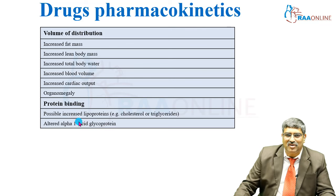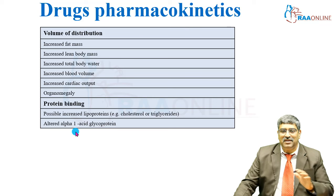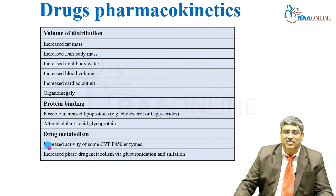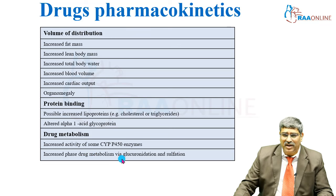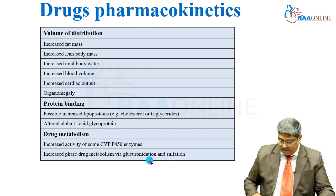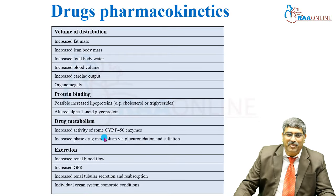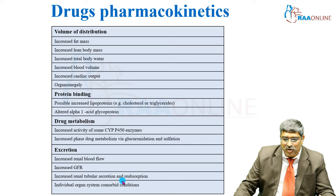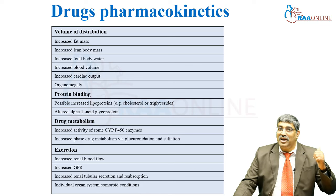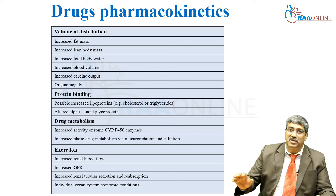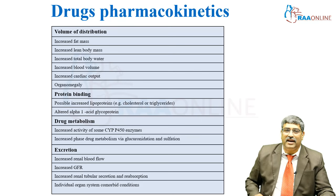Protein binding is altered due to increased lipoprotein and altered alpha-1 acid glycoprotein. Drug metabolism is increased because of increased cytochrome P450 activity and increased metabolism via glucuronidation and sulfation. Excretion is also rapid because of increased renal blood flow, increased glomerular filtration rate, and increased tubular secretion and reabsorption. Individual organ system effects of obesity can further alter drug pharmacokinetics.